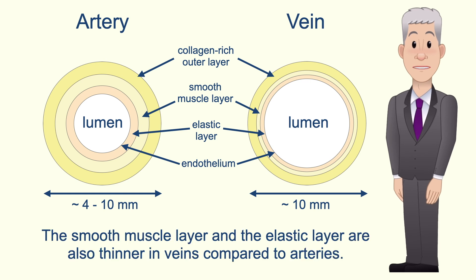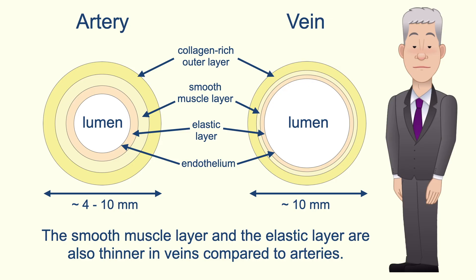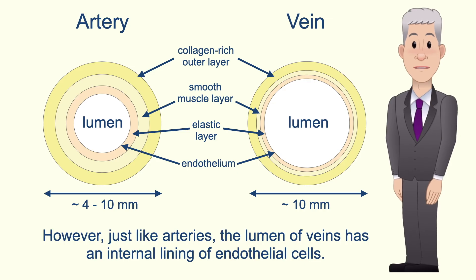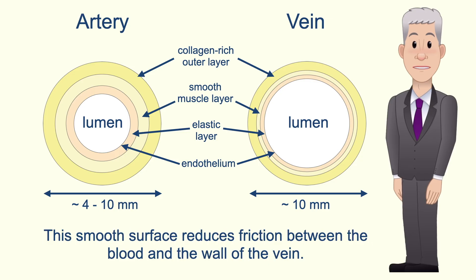The smooth muscle layer and the elastic layer are also thinner in veins compared to arteries. Remember that the blood in veins does not travel in pulses so there's no elastic recoil. However, just like arteries, the lumen of veins has an internal lining of endothelial cells and this smooth surface reduces friction between the blood and the wall of the vein.